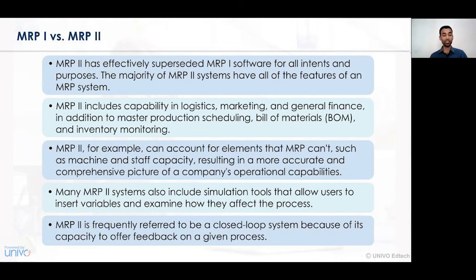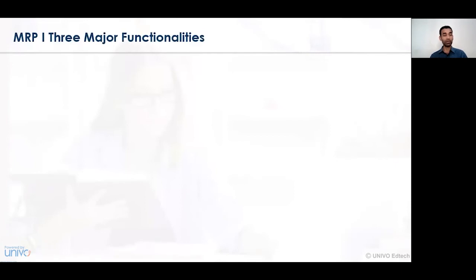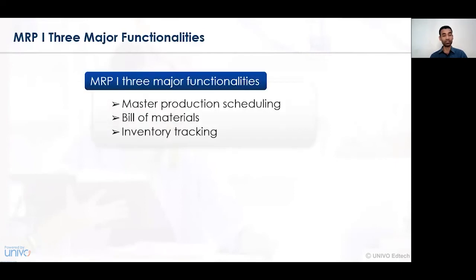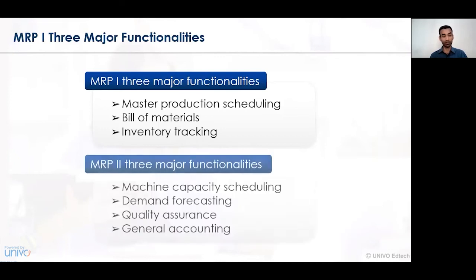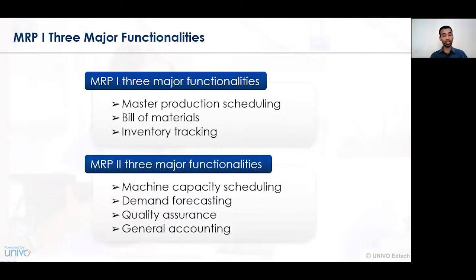This is the difference between MRP1 and MRP2 software. The three major functionalities of MRP1 are master production scheduling, billing of materials, and inventory tracking. For MRP2, the additional major functionalities include machine capacity scheduling, demand forecasting, quality assurance, and general accounting. These are the various major functionalities undertaken by MRP software, either MRP1 or MRP2.